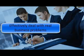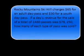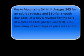Let's learn the five steps to solving any word problem. Step 1: Read the entire problem. Rocky Mountain Ski Hill charges $65 a day for an adult day pass and $30 a day for a youth day pass. If a day's revenue for the sale of a total of 1,430 passes was $78,250, how many of each type of pass was sold?